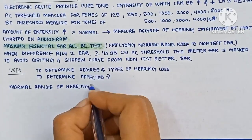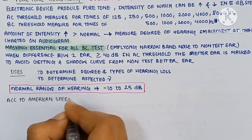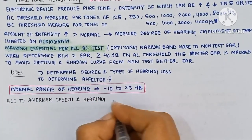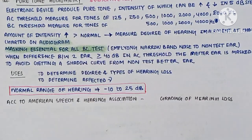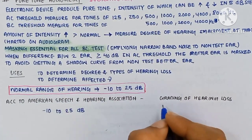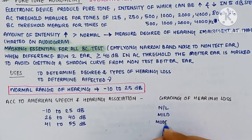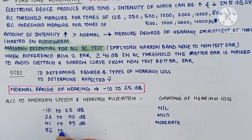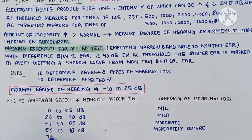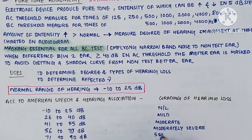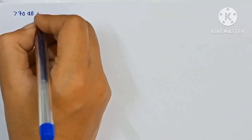The normal range of hearing is minus 10 to 25 dB according to the American Speech and Hearing Association. The grading of hearing loss: minus 10 to 25 dB is normal, 26 to 40 dB is mild, 41 to 55 is moderate, 56 to 70 is moderately severe, 71 to 90 is severe, and more than 91 dB is profound hearing loss.